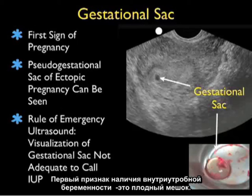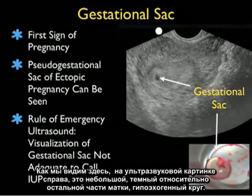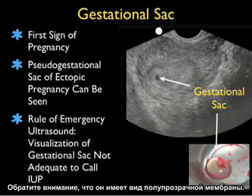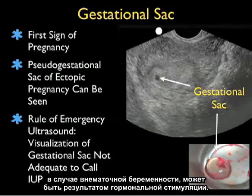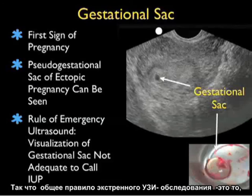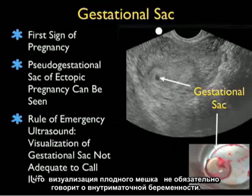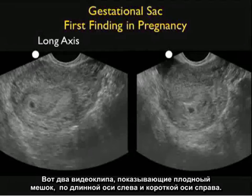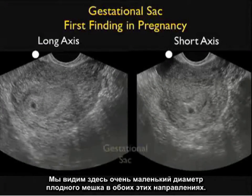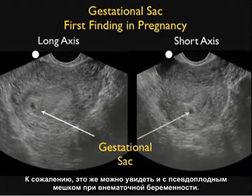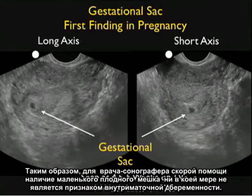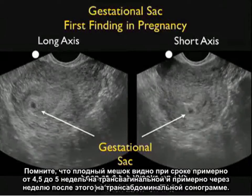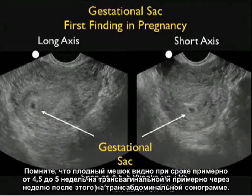The first finding during an intrauterine pregnancy is a gestational sac. As seen in the ultrasound picture, it's a small round dark or hypoechoic circle relative to the rest of the uterus. Unfortunately, the gestational sac alone is not diagnostic of an intrauterine pregnancy, as a pseudo-gestational sac of ectopic pregnancy can be seen from hormonal stimulation. These video clips show the gestational sac in long axis and short axis — a very small diameter sac that can also be seen with a pseudo-gestational sac of ectopic pregnancy. The gestational sac is seen at about 4.5 to 5 weeks on transvaginal sonography and about a week later on transabdominal sonography.